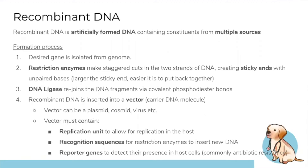There are a few characteristics of this vector. First, it needs a replication unit so the gene continues replicating. Second, it needs recognition sequences so we know where the gene should be inserted. Third, we need reporter genes to confirm the gene is actually in the vector — for example, antibiotic resistance genes, so bacteria on an agar plate will show the process is working.